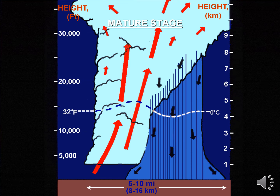As rising currents of air in the updraft continue to cool and condense into cloud droplets, condensation eventually leads to the development of rain droplets. Liquid and ice particles become suspended at the top of the cloud, leading to a charge separation between the top of the cloud and the ground, resulting in lightning. Eventually, the weight of the rain and ice becomes too heavy for the updraft to sustain — they fall toward the ground, and evaporation around the rain droplets cools the surrounding air, forming a downdraft. Once the downdraft develops, the storm has moved into its mature phase.